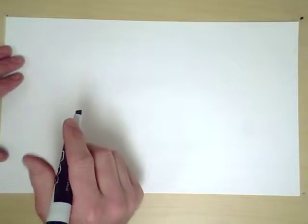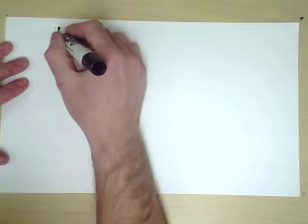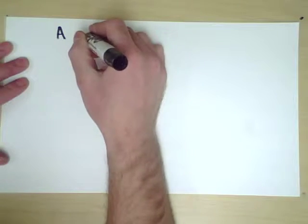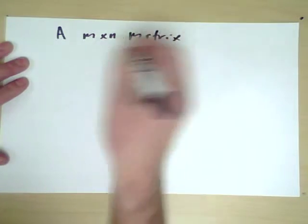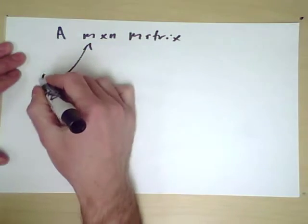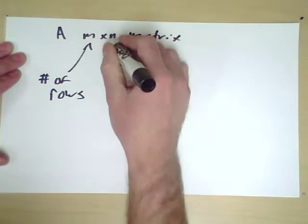Now, to actually compute Ax equals b, let's assume that A is an m by n matrix, meaning of course that it has m rows and n columns.